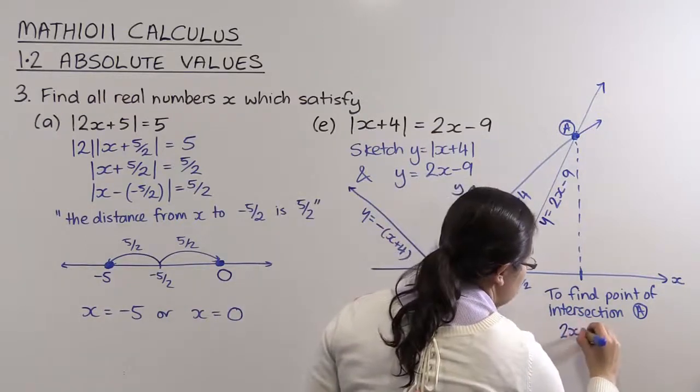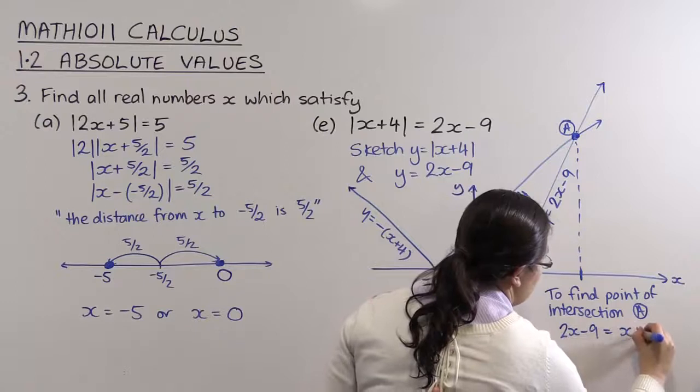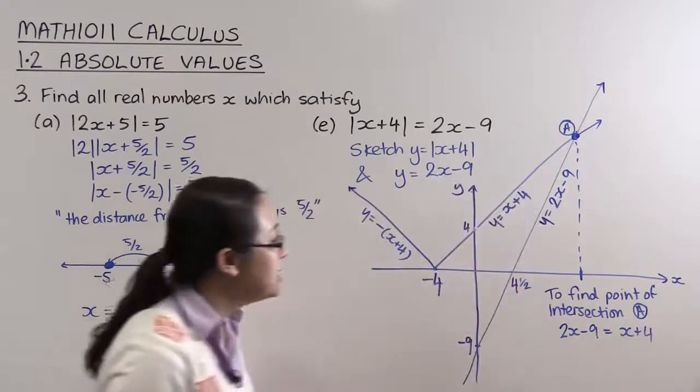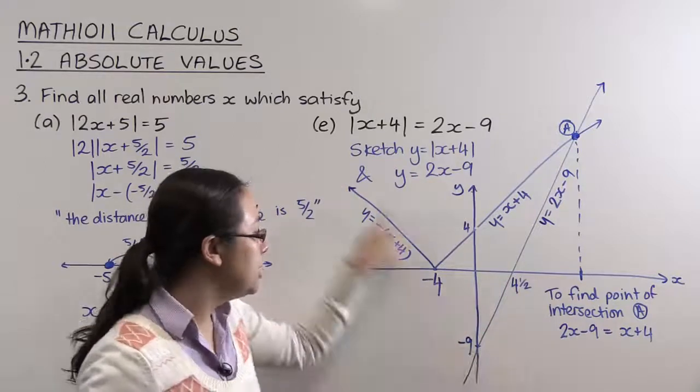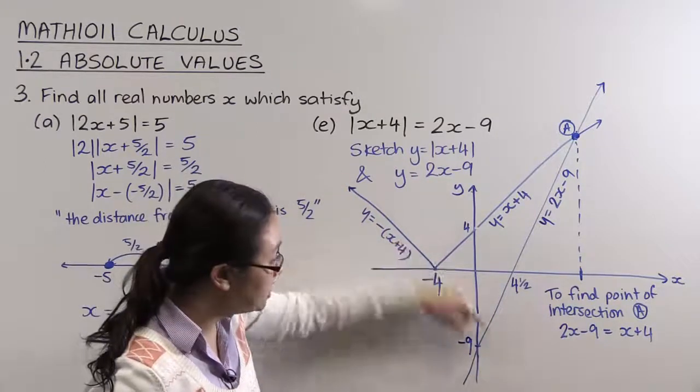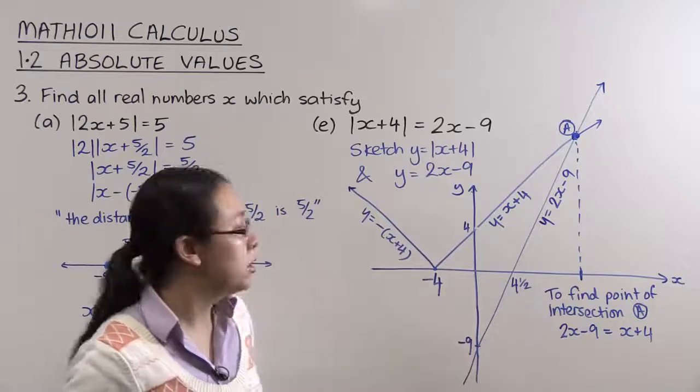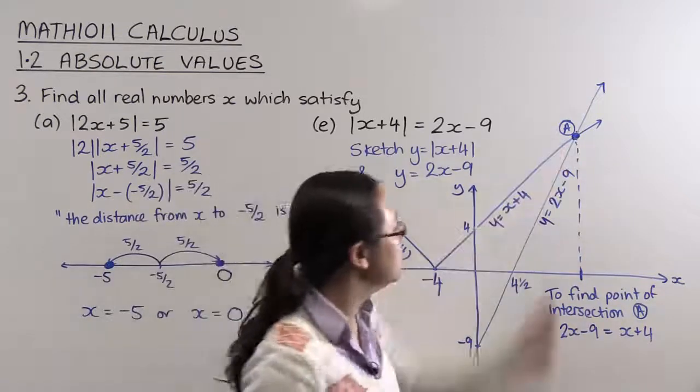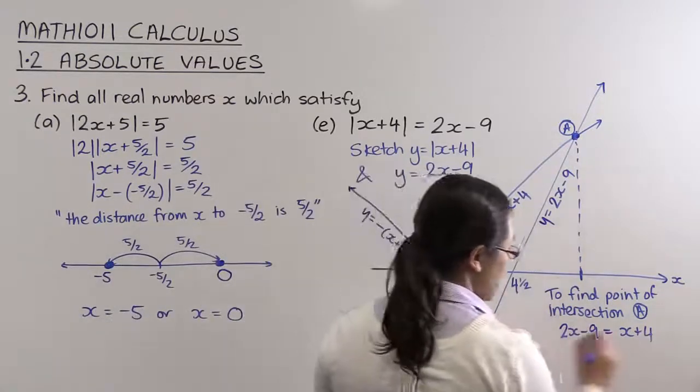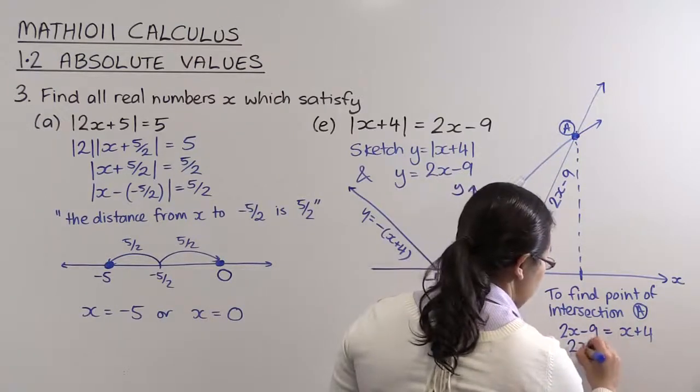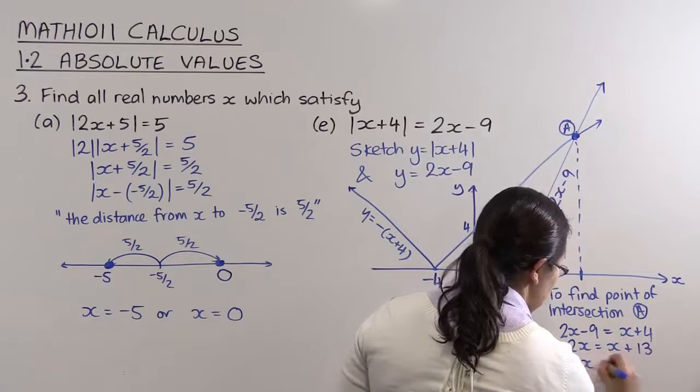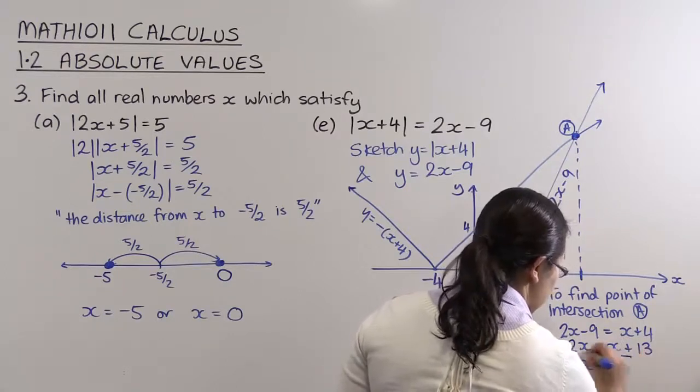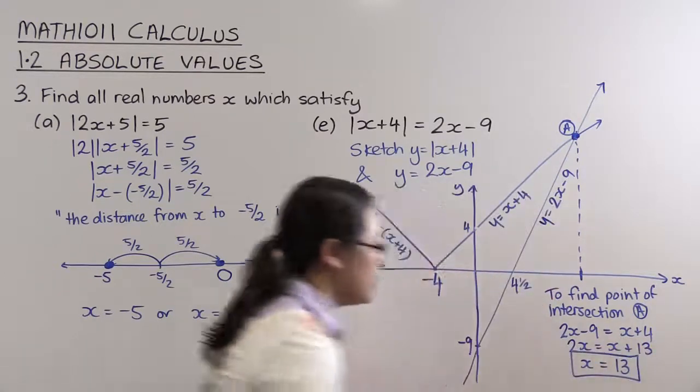So 2x minus 9 equals x plus 4. We can see that this 2x minus 9 does not intersect this branch minus outside of x plus 4. There's no intersection down here at all. Okay, so we can see there's only one solution, and that's the solution to this. And so here we have 2x must be x plus 13. So x must equal 13. Okay, so the solution to our equation.